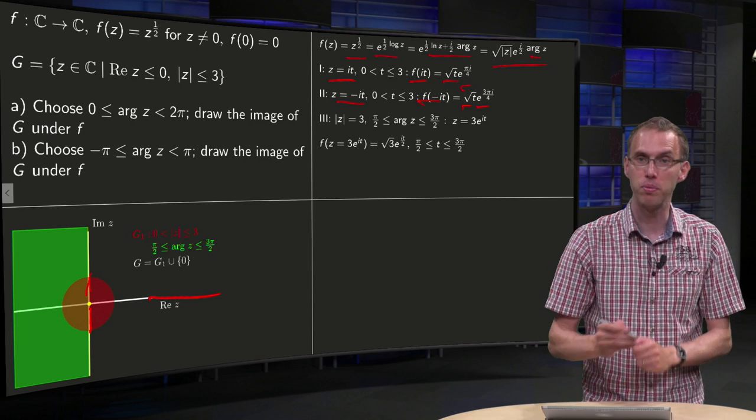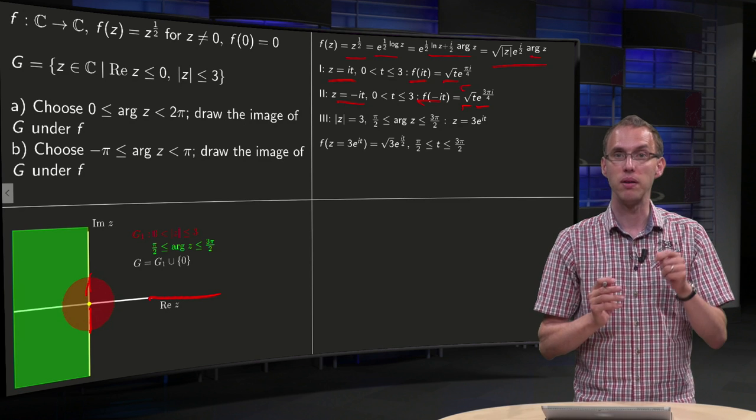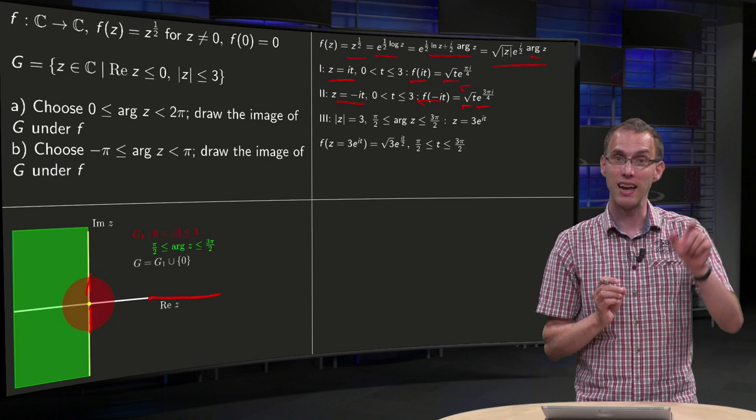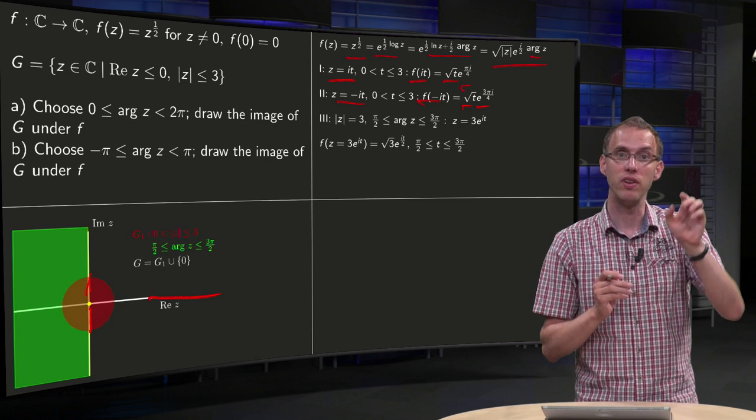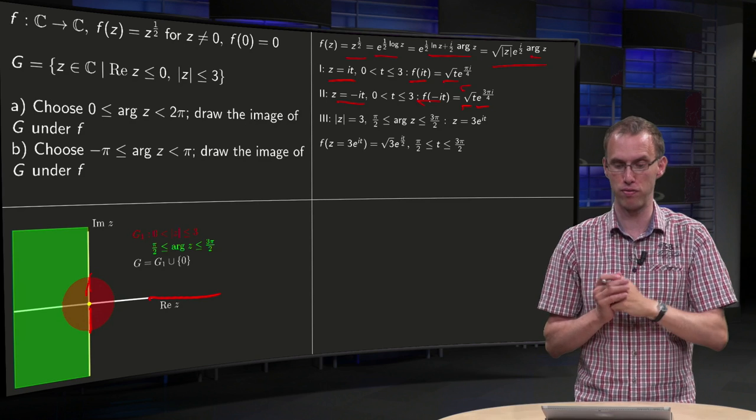So our function value will be square root of t times e to the power of 3 pi i over 4, so again a line segment with size square root of 3, but now with a different angle, 3 pi over 4 instead of pi over 4.